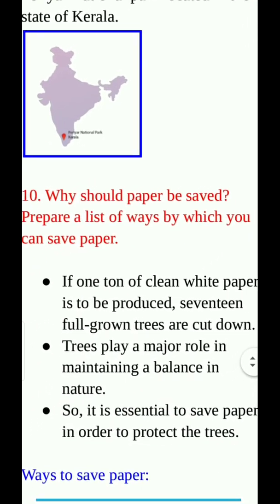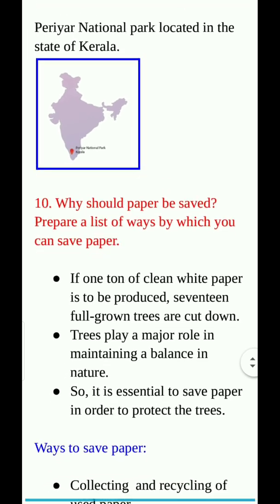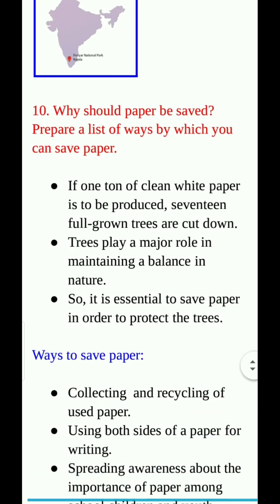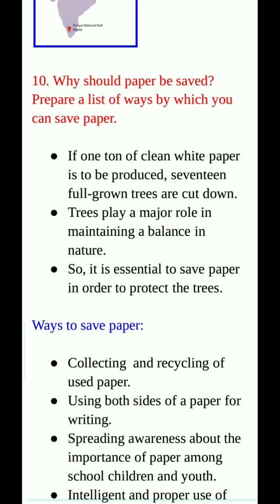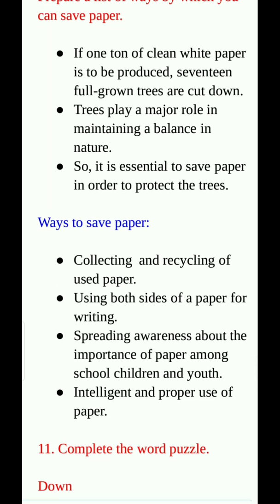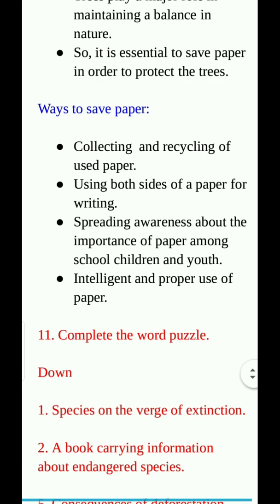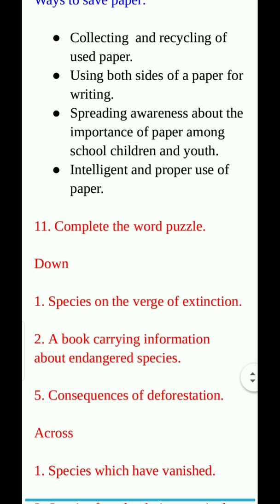Question number 10: Why should paper be saved? Prepare a list of ways by which you can save paper. If one ton of clean white paper is to be produced, 17 full-grown trees are cut down. Trees play a major role in maintaining a balance in nature, so it is essential to save paper in order to protect trees. Ways to save paper: collecting and recycling used paper, using both sides of the paper for writing, spreading awareness about the importance of paper conservation among school children and youth, and intelligent and proper use of paper.